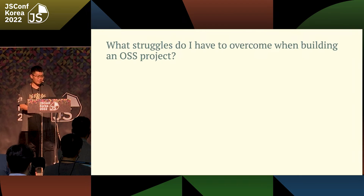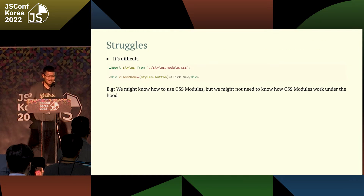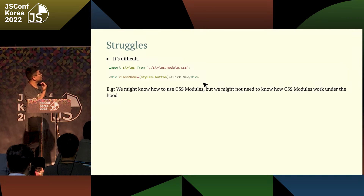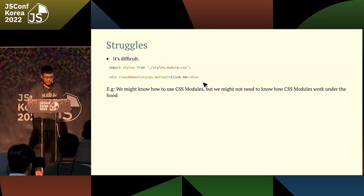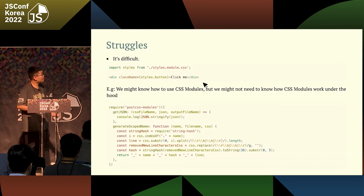I want to share some struggles I had to overcome when building just-preview. The first one is technical difficulty. For example, CSS Modules — the syntax is simple, you import styles from a CSS module file and use it. But when I tried to support CSS Modules in just-preview, I had to work with much more complex code. I learned a lot though.